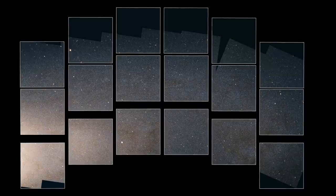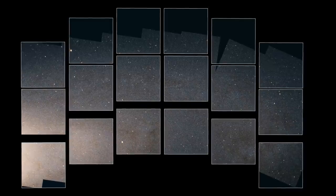WFIRST images are actually made of 18 separate panels, each one corresponding to a single 16-megapixel detector. The arrangement of these detectors creates the distinctive WFIRST image shape.